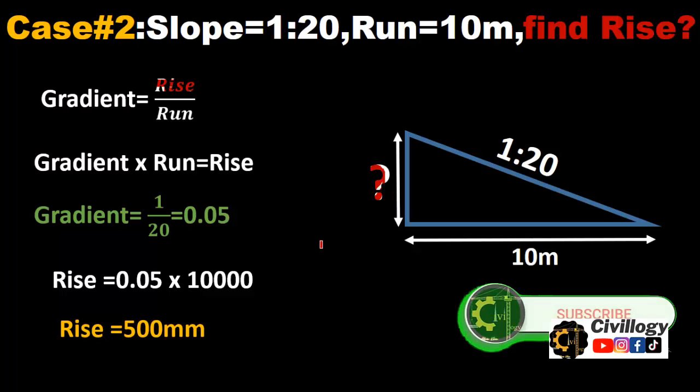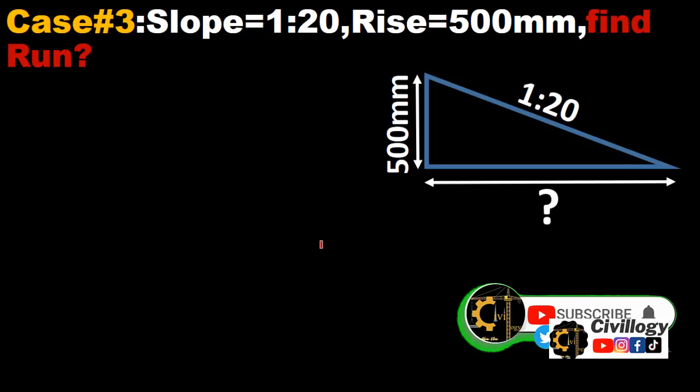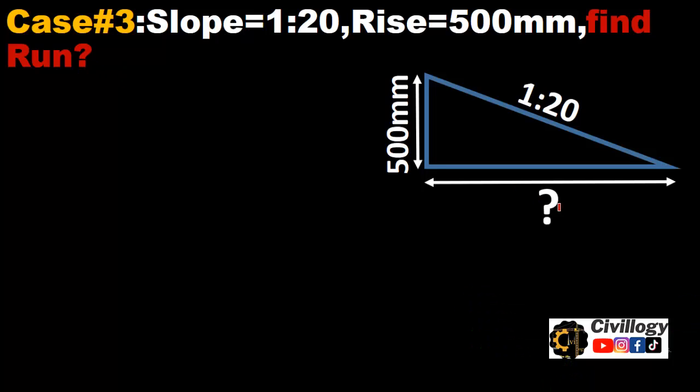And if we talk about the third case, slope is given, rise is also given, and we have to find run. This is the horizontal distance we have to find. Again, gradient is equal to rise divided by run. And rearranging this equation for run, this equation will become rise divided by gradient.